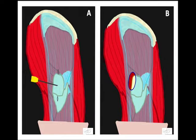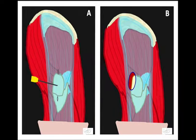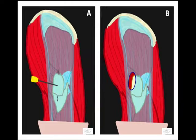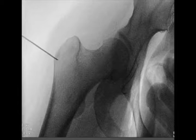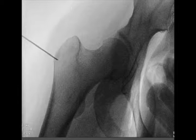This schematic representation shows the position of the spinal needle on the lateral aspect of the greater trochanter. In Figure A, the position of the skin incisions relative to the spinal needle is observed. Figure B represents the window created on the iliotibial band by creating incisions proximal and distal to the position of the spinal needle. This fluoroscopy image demonstrates the spinal needle on the lateral aspect of the greater trochanter.